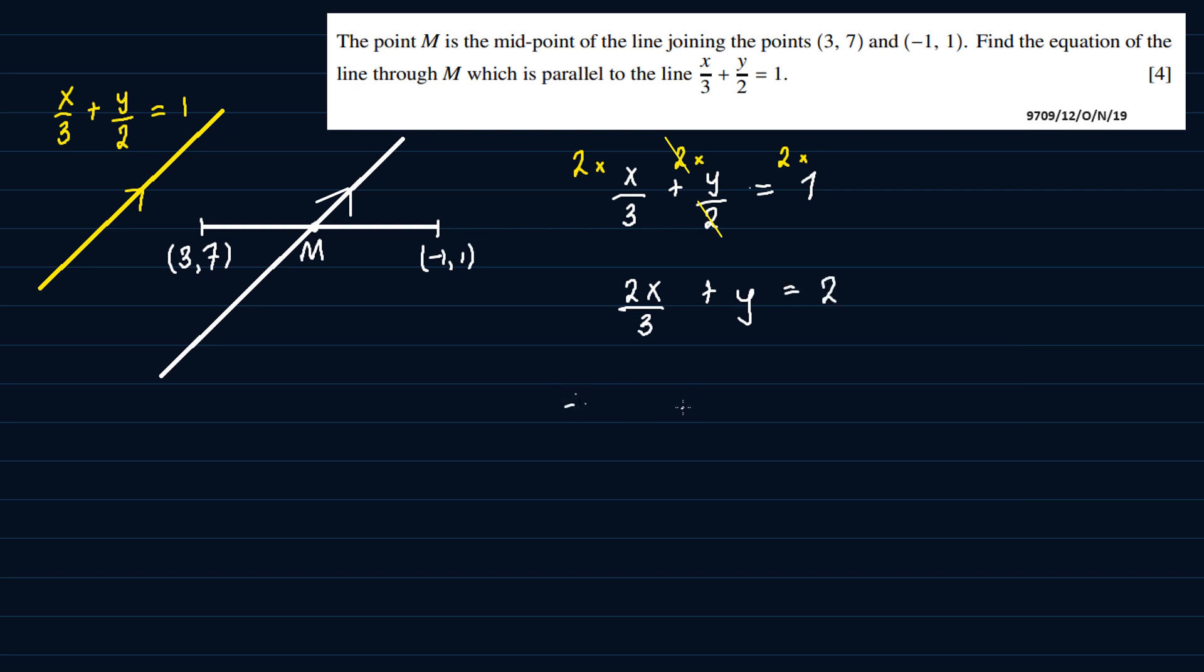Then I'll express it in the form y = mx + c. So it gives me y = -2/3x + 2. So this means that the gradient of the line from this form should be -2/3.